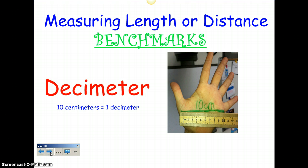Then we have a decimeter. If you open up your hand, the distance across your palm from one end to the other is about a decimeter, and there are 10 centimeters in one decimeter. When you think about the word decimeter, it has 'deci' in it, which means 10.